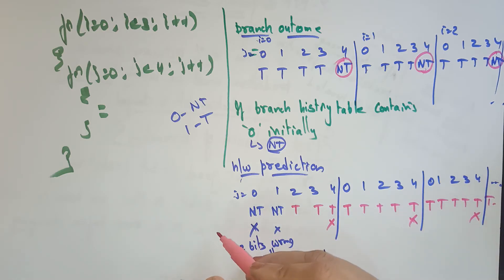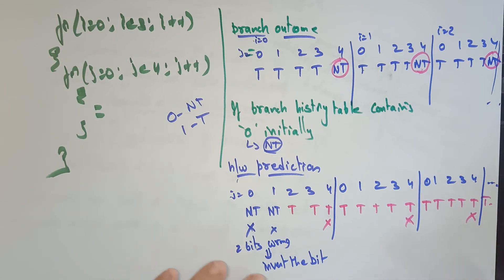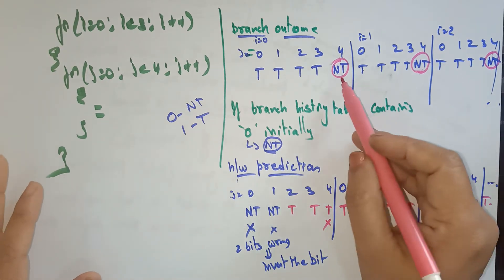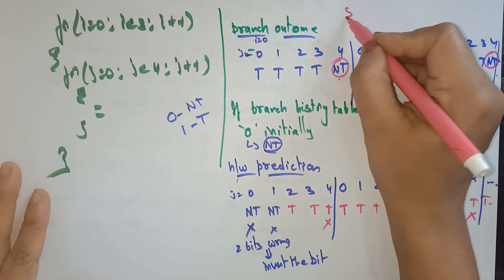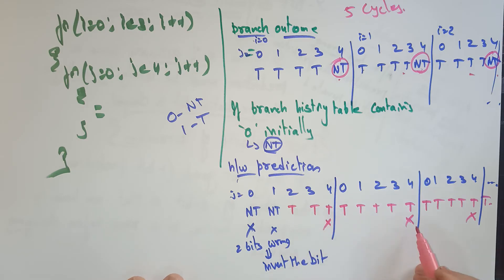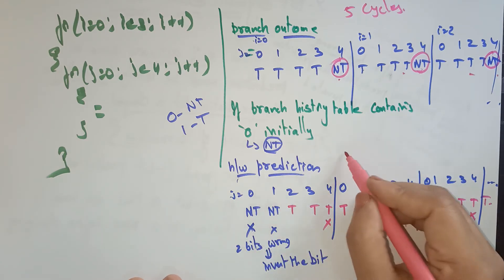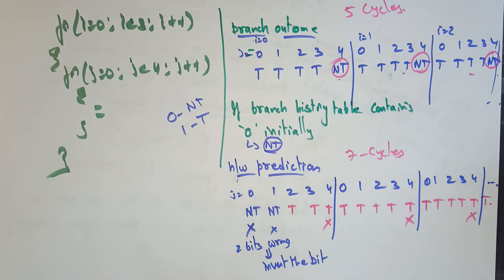Total 5 bit predictions are wrong here — 5 wrong predictions causing stalls. And here 7 cycles are wrong. So for this example, a total of 7 clock cycles have stalls.